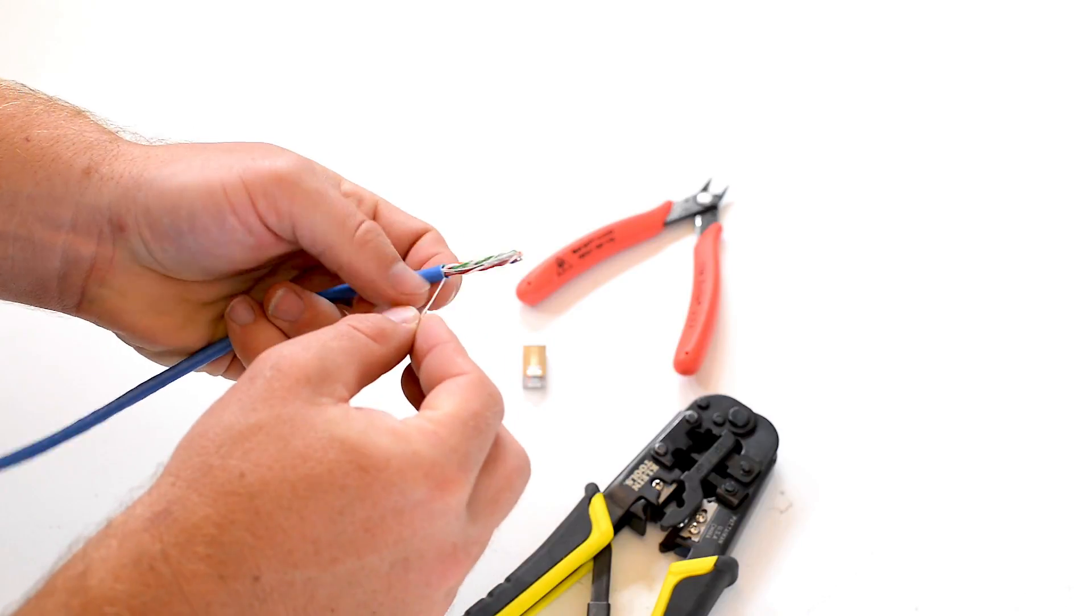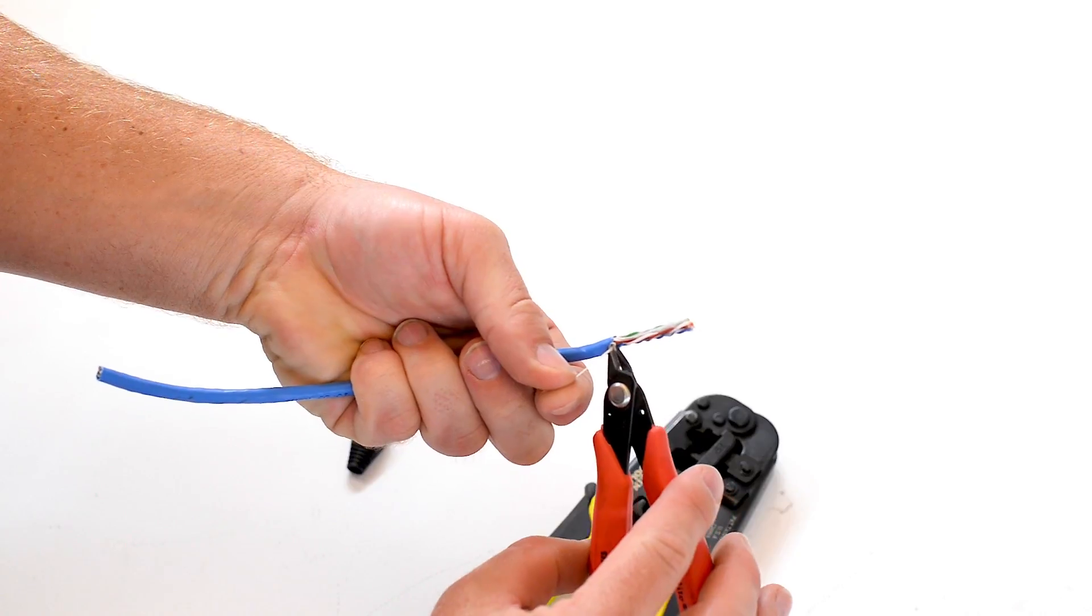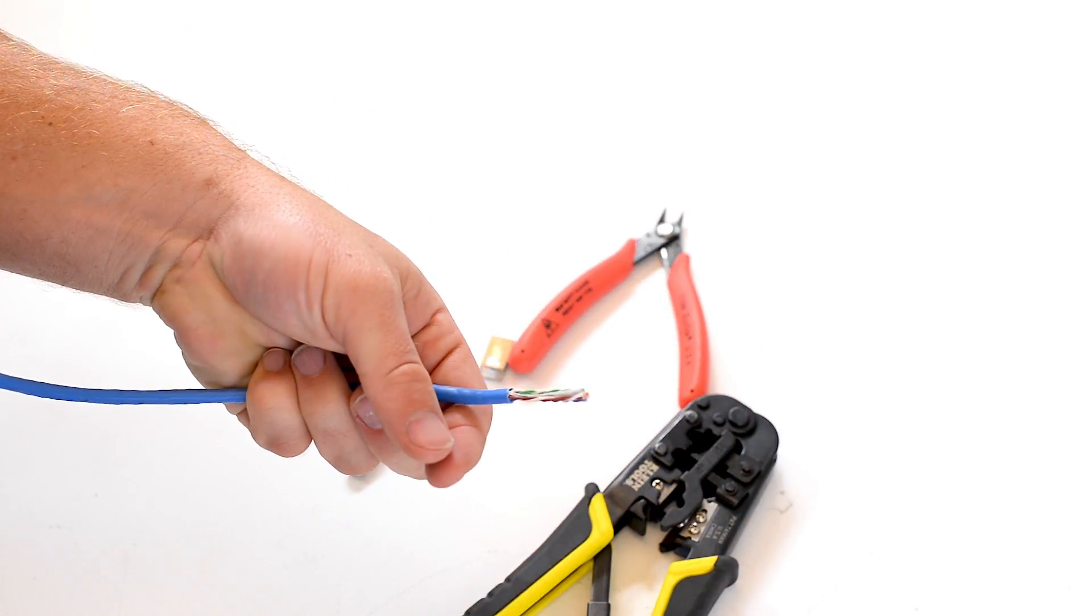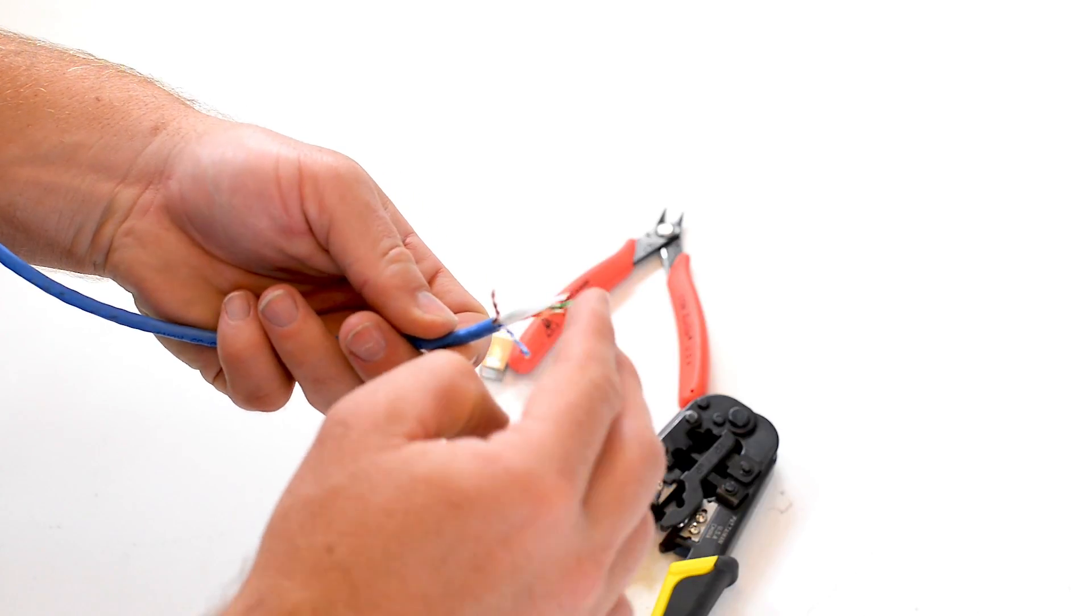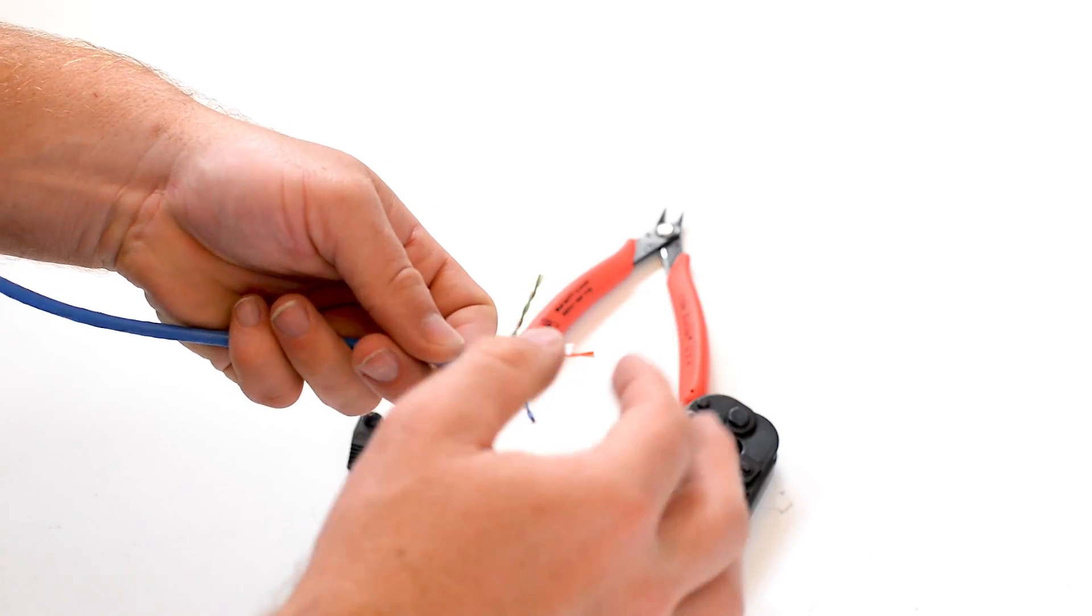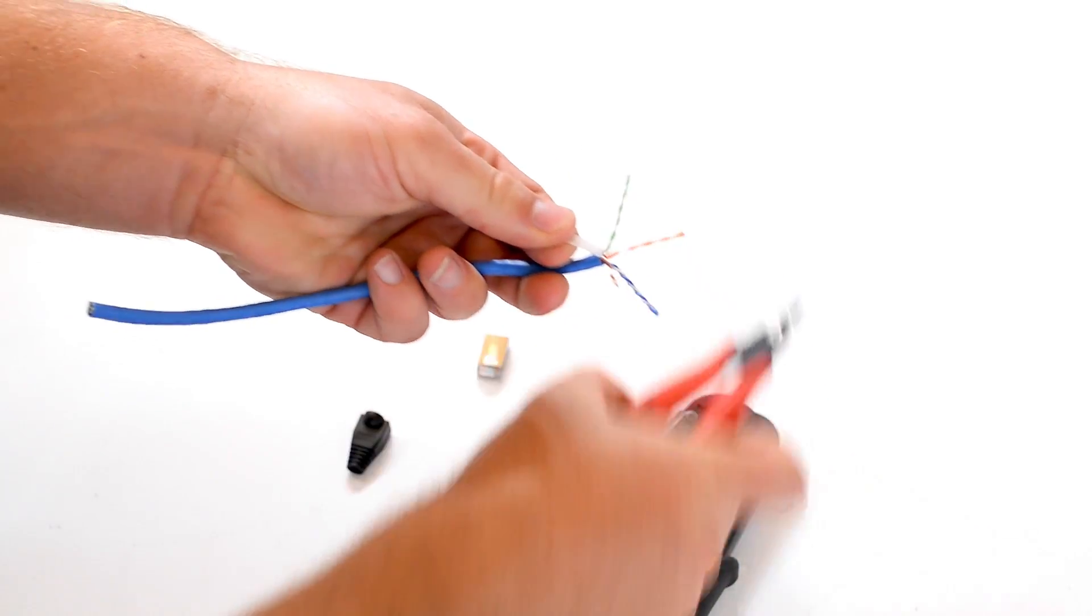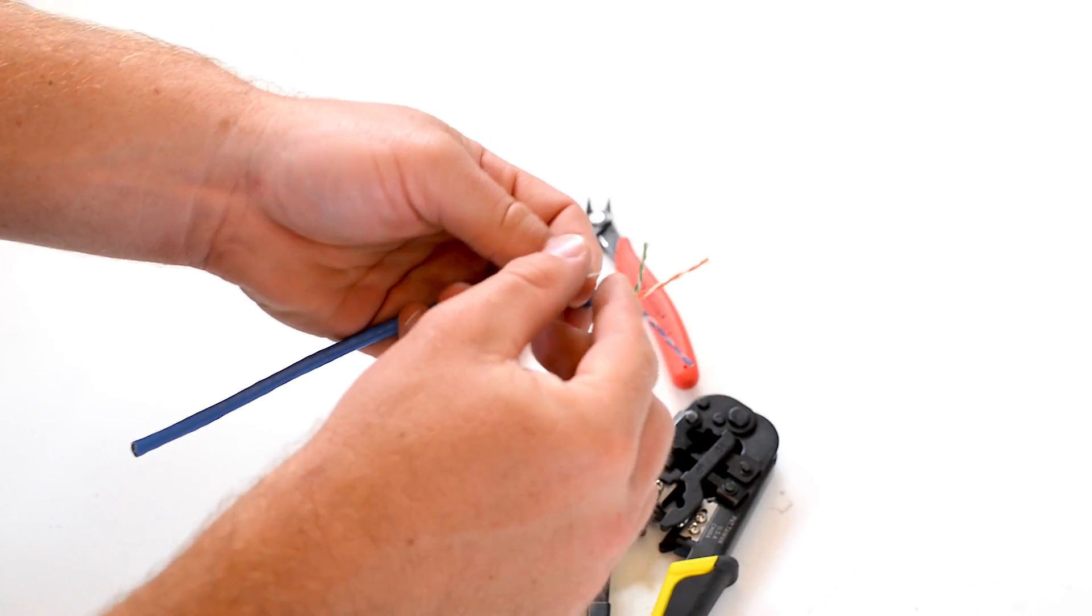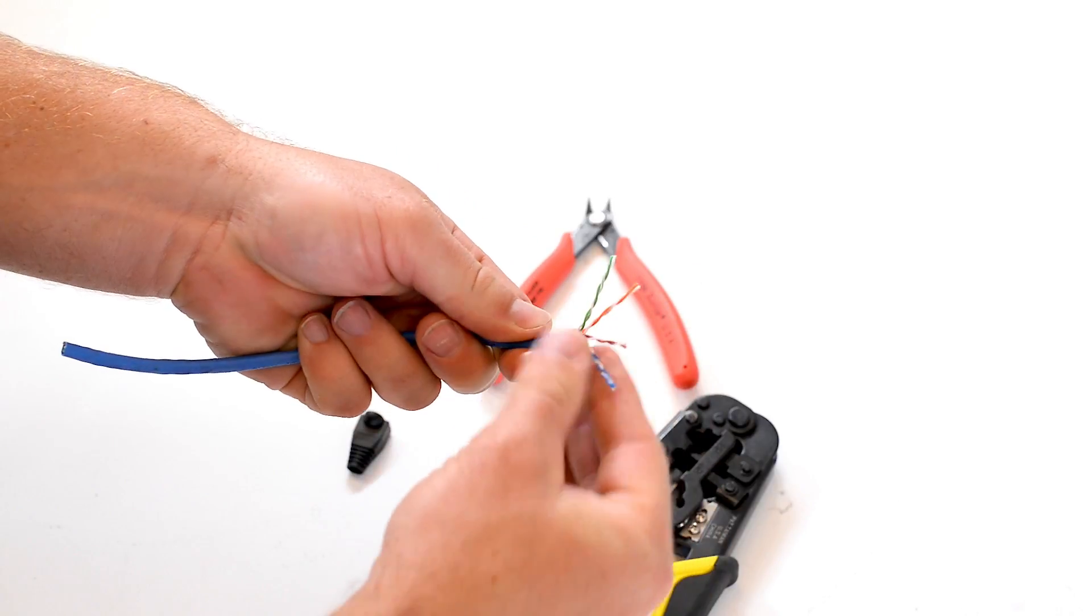Once I have that jacket stripped, there is a pull string in this particular network cable, which is very common in a lot of network cables, so I am going to go ahead and cut that. Once I have that pull string cut, I am going to start separating the individual pairs of wire within the network cable. At this point you are going to expose another piece of material. Typically you will only see this type of material in a CAT6 cable, I am going to go ahead and cut that. At this point you can see I have exposed the four different pairs of wires within this network cable.